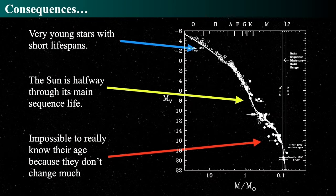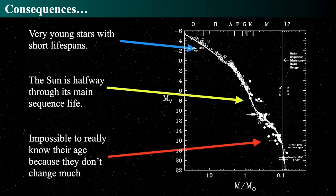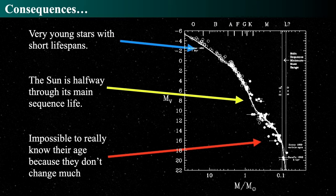Going back to the main sequence luminosity-mass-spectral type relationship: O and B type main sequence stars have very short lifespans — on the order of tens of millions of years. Every O, B, and A type star you see in the sky did not exist when the dinosaurs roamed the Earth 65 million years ago. Orion's Belt was not in the sky for the dinosaurs. The sun is about four and a half billion years old, halfway through its main sequence lifespan, and will continue for another four to five billion years before changing its position on the HR diagram.